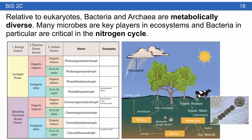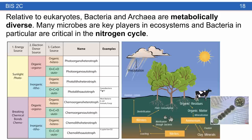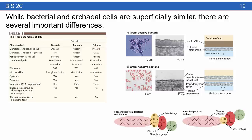Relative to eukaryotes, bacteria and archaea are metabolically much more diverse. Many microbes are key players in ecosystems, especially bacteria, which are absolutely key to the nitrogen cycle. Most familiar organisms like animals and fungi are chemoorganoheterotrophs, but bacteria and archaea can do just about everything else. Cyanobacteria are photolithoautotrophs with plants, and there's good reason for that — plants can do photosynthesis through a symbiosis with cyanobacteria.